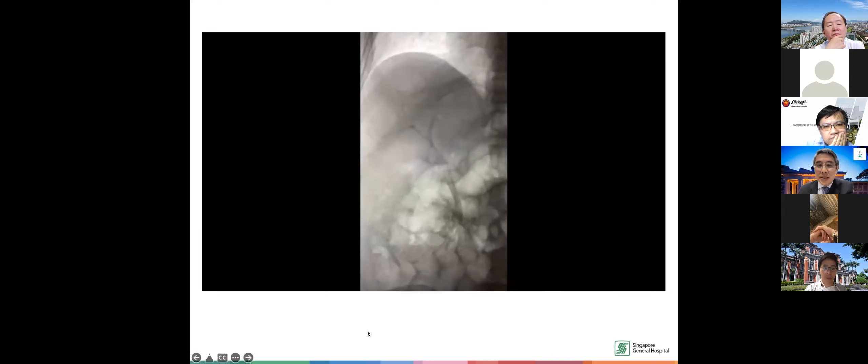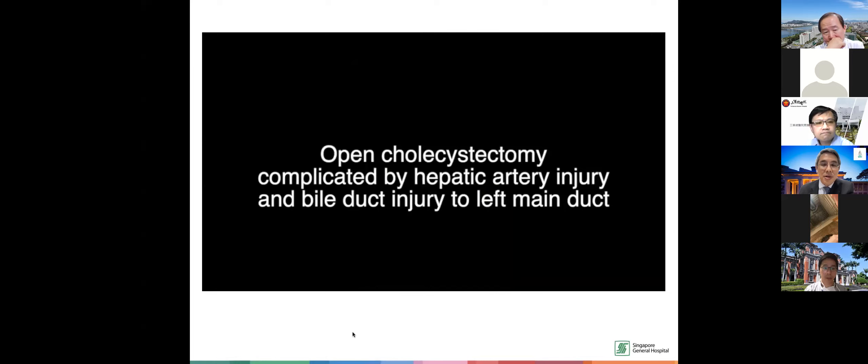One thing to note: whenever you do benign biliary strictures with ischemic injury, you have to be careful and watch out for problems down the road. Now let's move on to malignant biliary strictures — the usual cholangiocarcinomas, gallbladder cancer, or secondary metastasis.